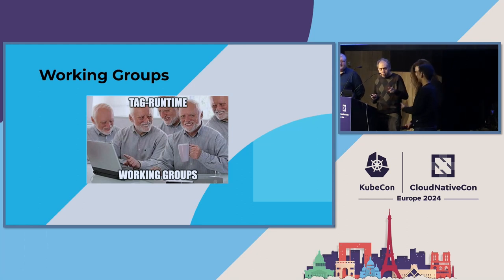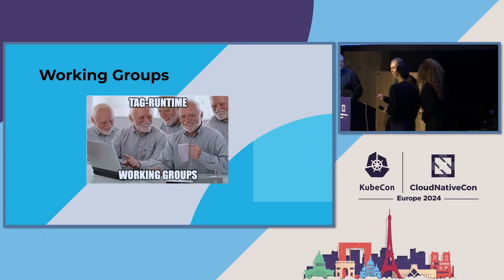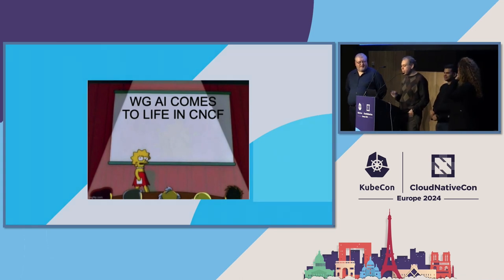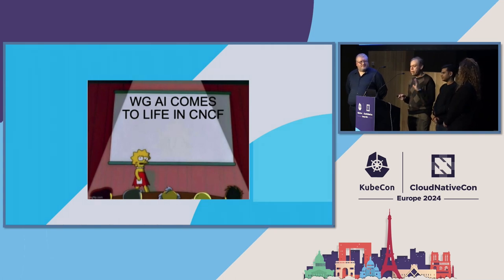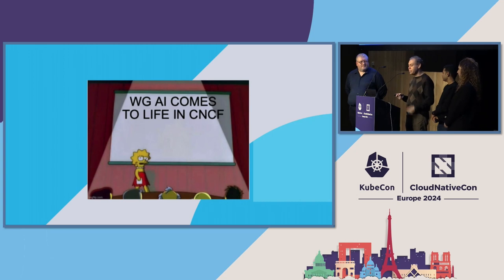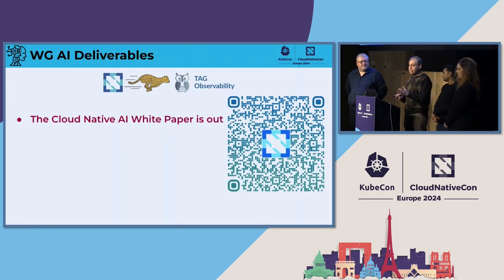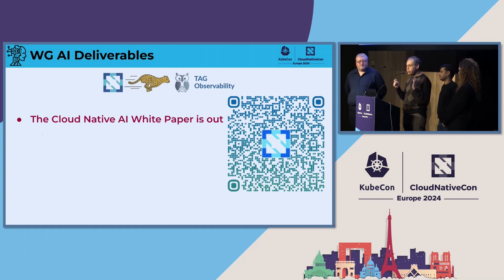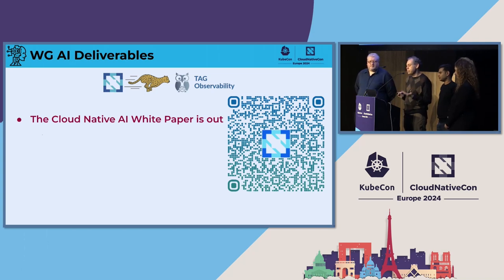A little bit about our working groups. We recently created the Cloud Native AI working group, and we're very excited about this — AI is happening everywhere. One of the things we're very excited about is the Cloud Native AI white paper, our first deliverable, published two days ago. This is something we're thinking about doing many more things around — check it out. If you have any feedback, send us a Slack message.